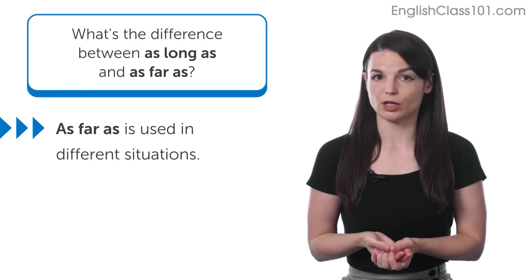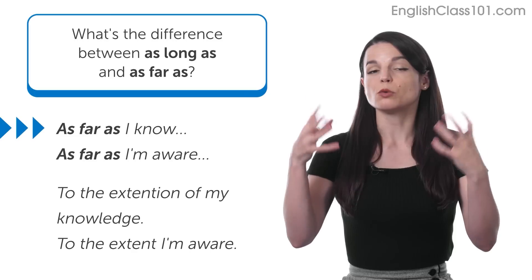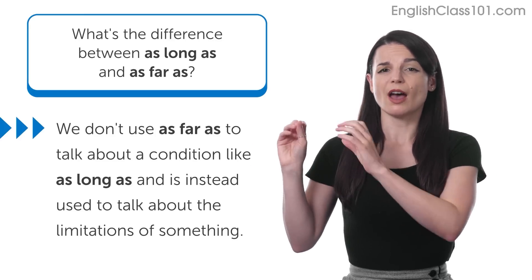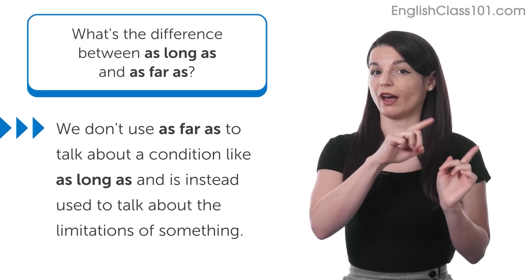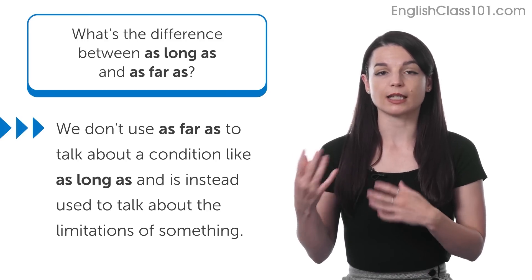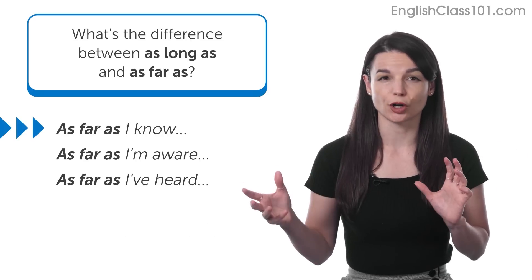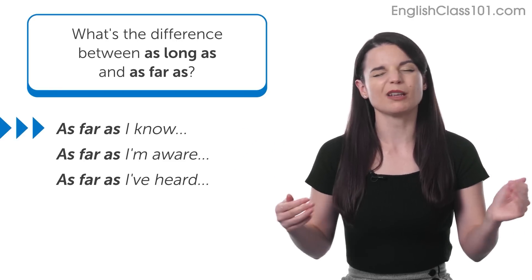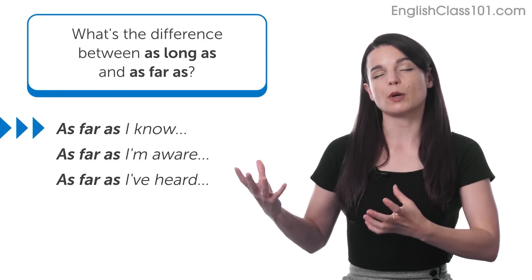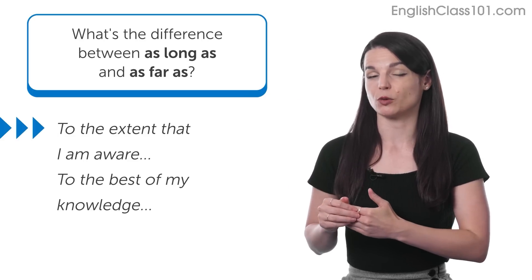'As far as', on the other hand, is used in different situations. We use 'as far as' in expressions like 'as far as I know' or 'as far as I'm aware', which means to the extent that I'm aware or to the extent of my knowledge. So you can see that these two expressions are used very differently. We don't use 'as far as' to talk about a condition. We use 'as far as' to express the limitations of something — that's another way to understand it, like saying 'to the best of my knowledge'.